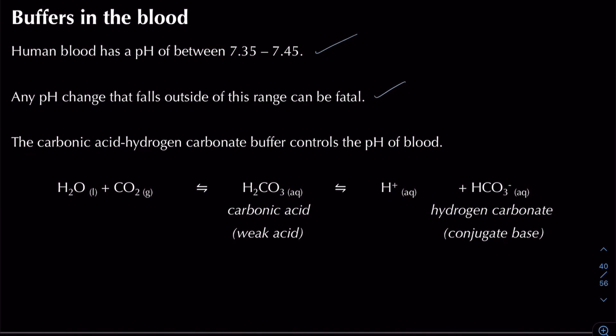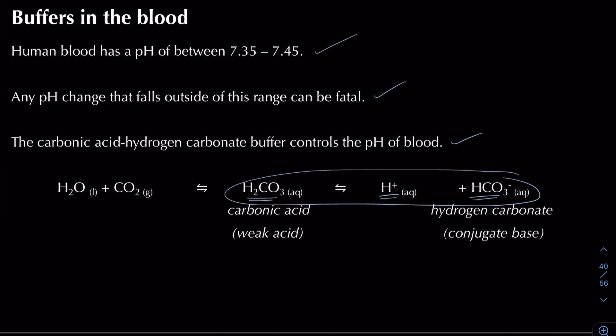The carbonic acid/hydrogen carbonate buffer is what controls the pH of blood. Carbonic acid is our weak acid, and it dissociates to form protons (H+) and hydrogen carbonate ions as our conjugate base. This is our buffer equation. An extra process to be aware of for application questions is that carbonic acid is removed from the blood by producing carbon dioxide gas and water.